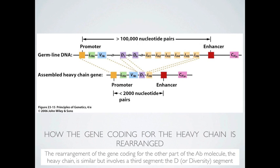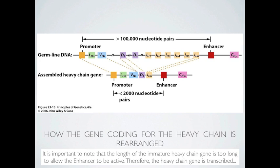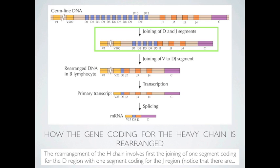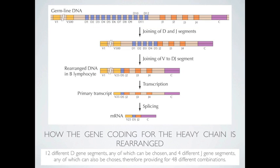The rearrangement of the gene coding for the heavy chain is very similar, but involves a third segment: the D, or diversity segment. The heavy chain gene is too long to allow the enhancer driving gene expression to be active, so the heavy chain gene is transcribed efficiently only after it has been rearranged. The rearrangement involves first the joining of one D segment with one J segment — there are 12 different D gene segments and 4 different J segments, providing 48 different combinations. The next stage involves joining one of 500 different V gene segments with the pre-joined D-J segment, increasing combinations to 24,000.